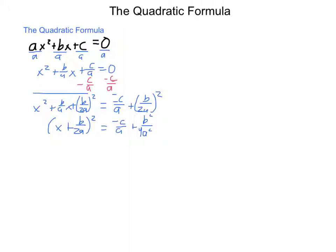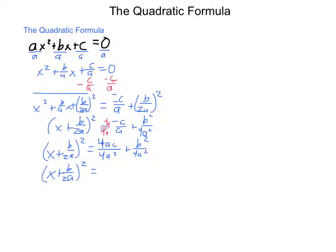Now I'd like to add the items on the right-hand side to each other, so I need a common denominator. I'm going to multiply by 4a over 4a, and I end up with x plus b over 2a squared equals positive 4ac over 4a squared, plus b squared over 4a squared. Combining the right-hand side, I have x plus b over 2a, quantity squared, equals b squared plus 4ac over 4a squared.